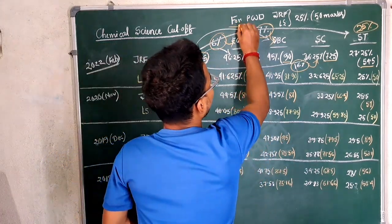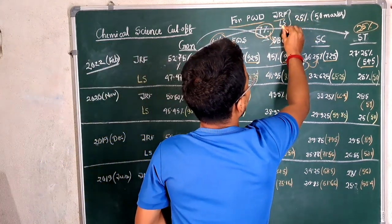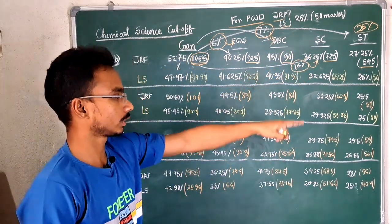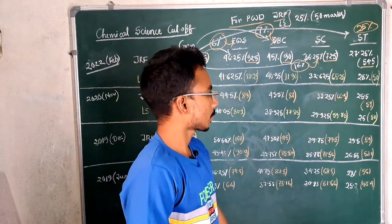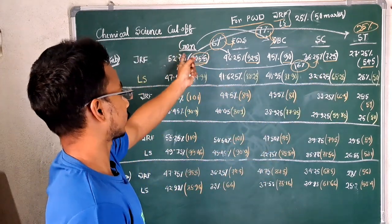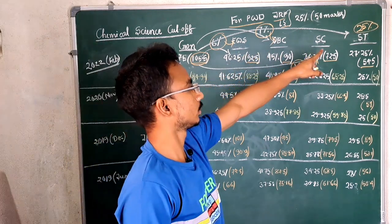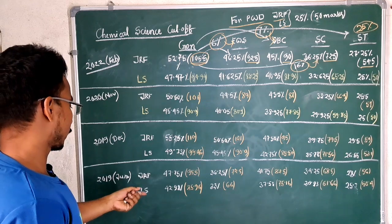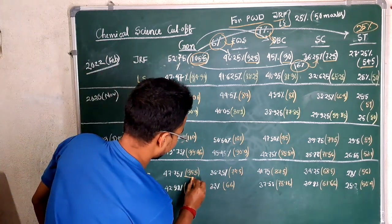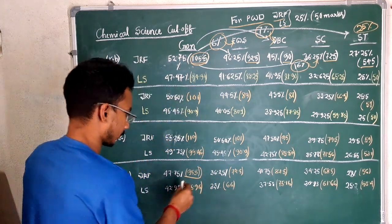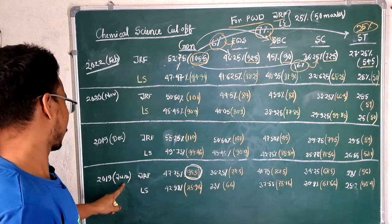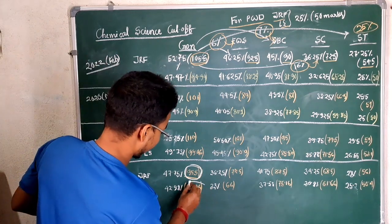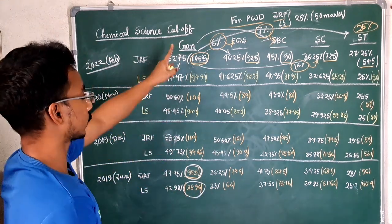And I checked all the previous year, for PWD, the JRF and the LS cutoff is 25 percent of 200 marks, means 50 marks. All the, that's why I didn't write here. I wrote for other categories, general EWS, OBC, SC and ST. So we are comparing for general, you can see that cutoff is 95.5 for JRF in 2019 June. And the LS is 85.96. So we will compare only general.